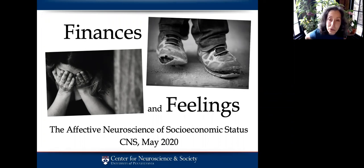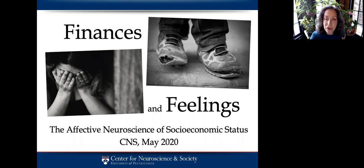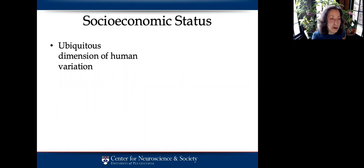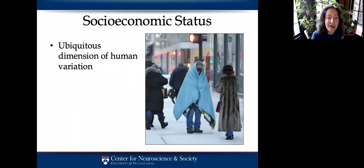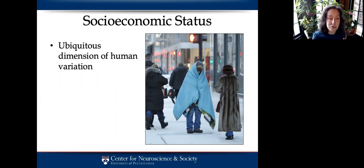Hello, and welcome to the CNS Symposium on the Affective Neuroscience of Socioeconomic Status. SES is a ubiquitous dimension of human variation. Wherever you go, you see people who are better off and worse off in terms of material resources and social resources like education, job status, and so forth. We pass people poor and rich on the street in our communities all the time. This demographic dimension has only begun to be explored in terms of brain function.